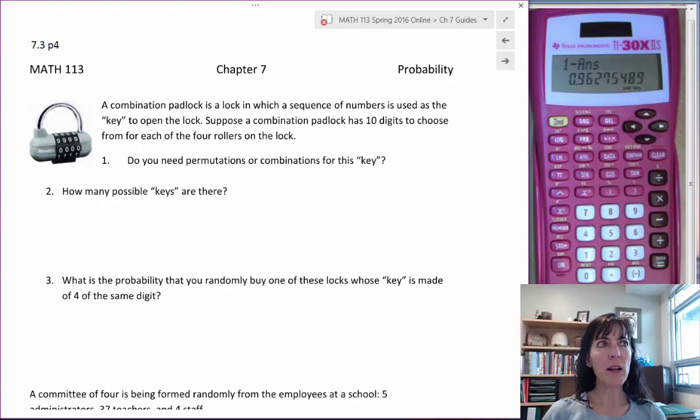A combination padlock is a lock in which a sequence of numbers is used as the key to open the lock. Suppose a combination padlock has 10 digits to choose from for each of the four rollers on the lock. You can see an example here. It starts with 0 and goes all the way to 9. So there's 10 digits for each of the rollers, and there's four rollers.